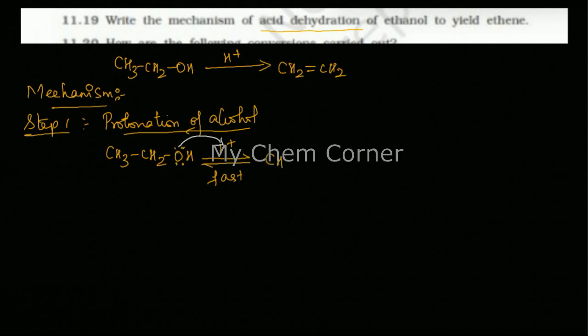Now when that happens, you will get CH3CH2. This oxygen already had a hydrogen with it. In addition, you're having another hydrogen. Now because oxygen lone pairs are lost, oxygen will become a positive charge. So here protonation of alcohol has taken place.